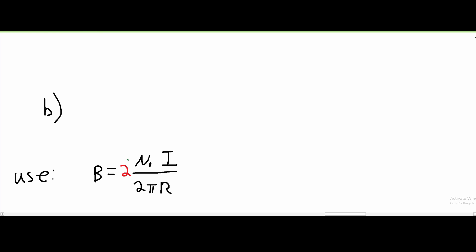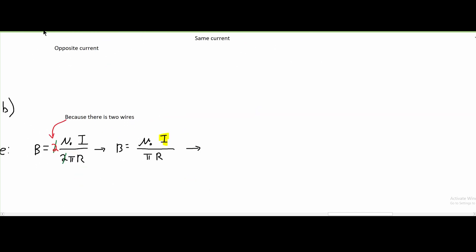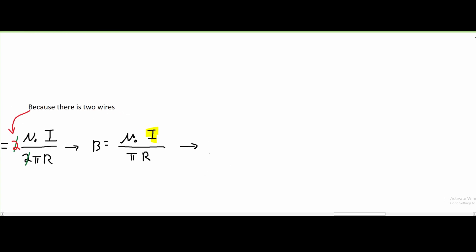And then after we do that, we can cancel out our 2s. So then we are just going to be left with B is equal to μ₀ times I over πR. We know that we need to find our current I, so we need to rewrite this so that I is by itself. When we do this, we're going to get B times πR over μ₀ is equal to I.